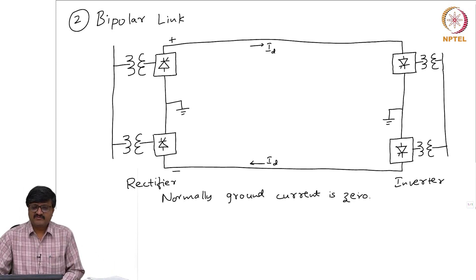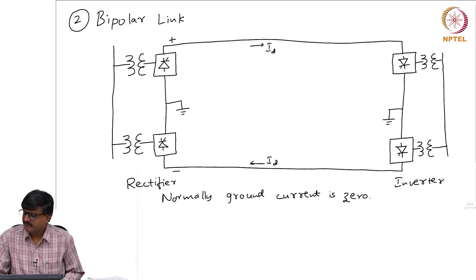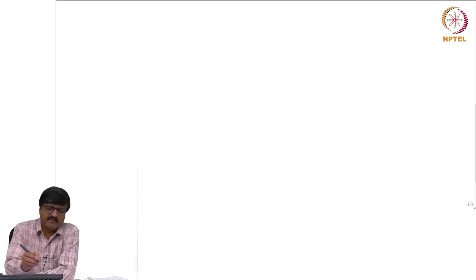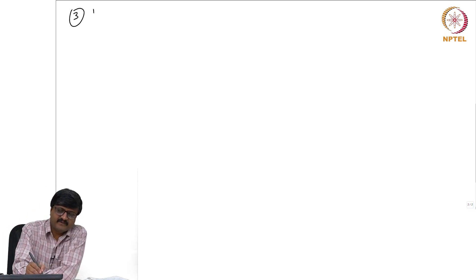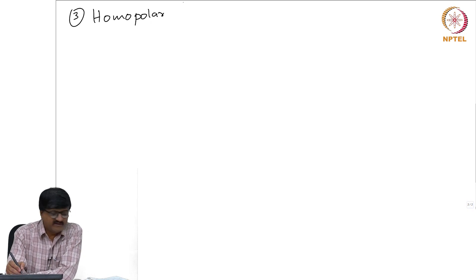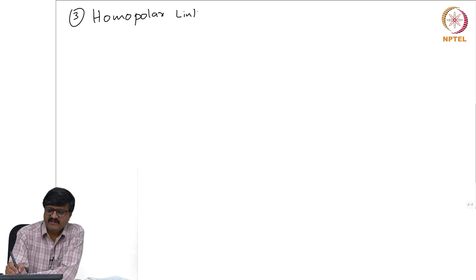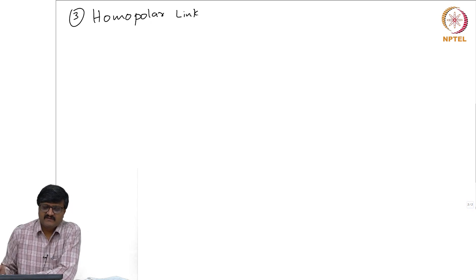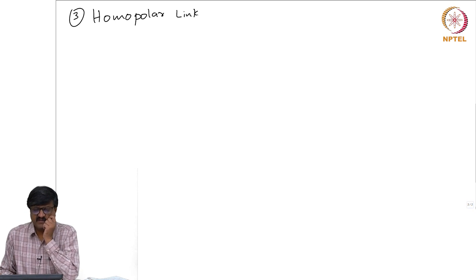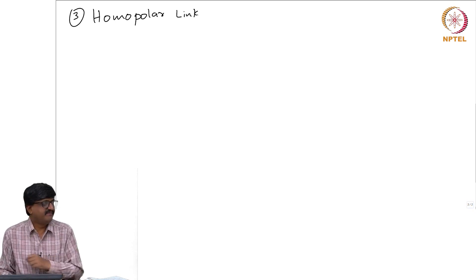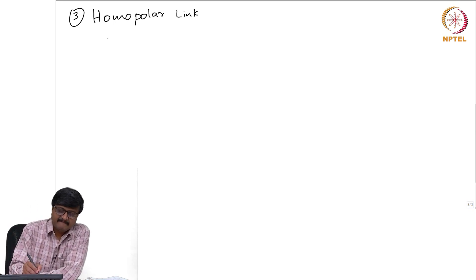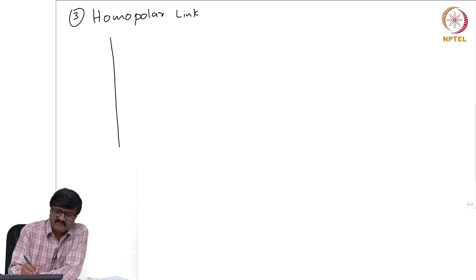This is what is known as bipolar. There is one more possibility — that is homopolar. These types of links are just mentioned for the sake of completeness. We will see that only one type is actually preferred in practice. Again I will draw the schematic diagram.